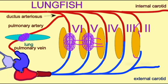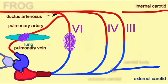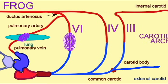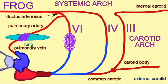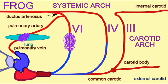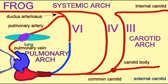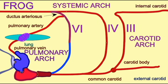Aortic arch 4 becomes the systemic arch. Frogs have a pair of these, left and right, and this forms the arch of the aorta, which goes ventrally to service the muscles and the major organs of the body. The 6th arch becomes the pulmonary arch, which brings deoxygenated blood to the lungs through a pulmonary artery, and returns oxygenated blood to the heart through a pulmonary vein.